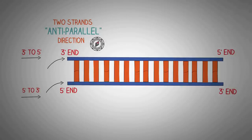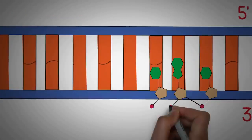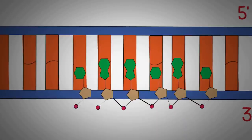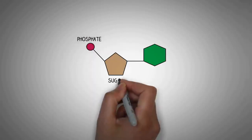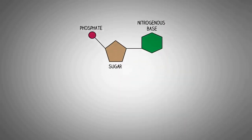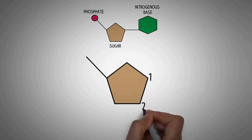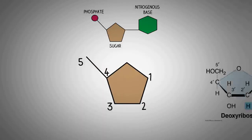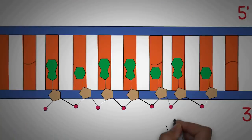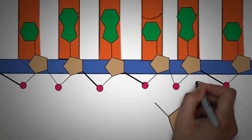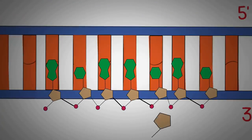To understand directionality better, let's look closely at the structure of DNA. In a single strand, nucleotides are joined together; each nucleotide has three important groups: the phosphate, the sugar, and the nitrogenous base. If we isolate the deoxyribose sugar, its carbon atoms are numbered 1 to 5 clockwise, with the 5th carbon outside the ring. The phosphate group is always attached to the 5th carbon. In a single strand, all deoxyribose sugars are aligned in the same direction.